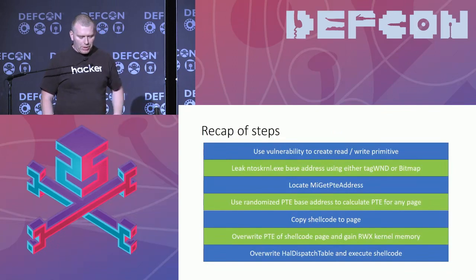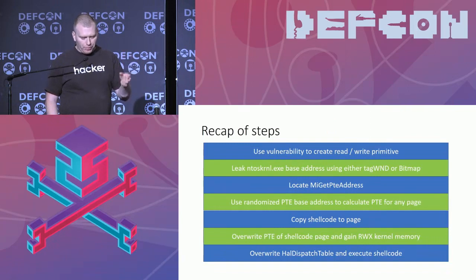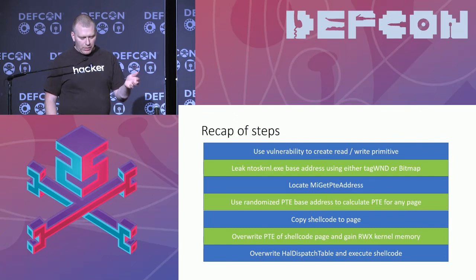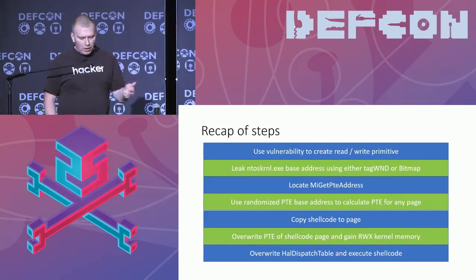Just to recap the steps: we use the vulnerability to create a read-write primitive. From that, we leak the base address of the NT kernel using either of the primitives. We locate the address of MiGetPteAddress. From that, we get the randomized base address of the PTE tables. We can then calculate the PTE of our shellcode address, copy our shellcode to that page, then overwrite the PTE of the shellcode and run it.